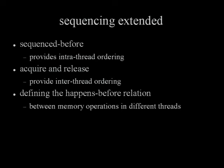Now we get into the parallel case. The main relationship between operations is 'sequenced before,' which comes from the serial case by adding the acquire and release operations on variables which get picked up in another thread. So if you have intra-thread ordering, you access an atomic variable, pick that up in another thread, and now those operations are sequenced before each other across that connection through memory.